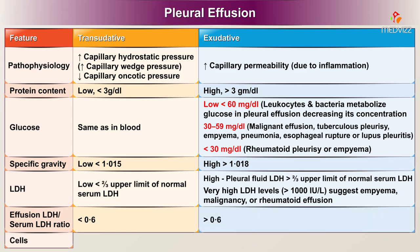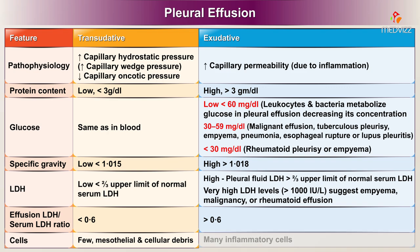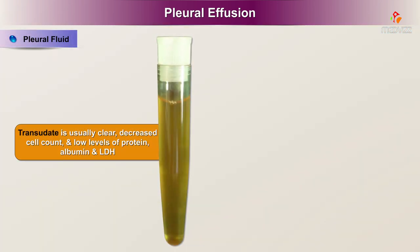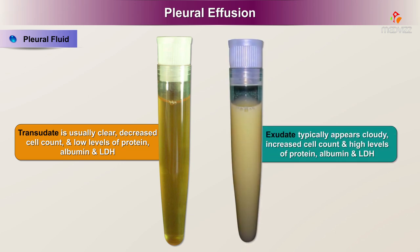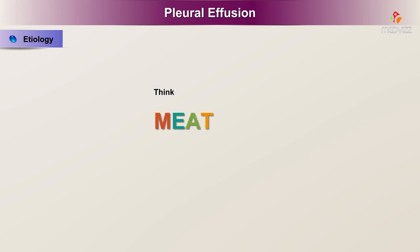The cells in a transudate are few mesothelial cells and cellular debris, while there are many inflammatory cells in an exudate. A transudate is usually clear, has a decreased cell count, and has low levels of protein, albumin, and LDH. An exudate typically appears cloudy, has an increased cell count, and has high levels of protein, albumin, and LDH.